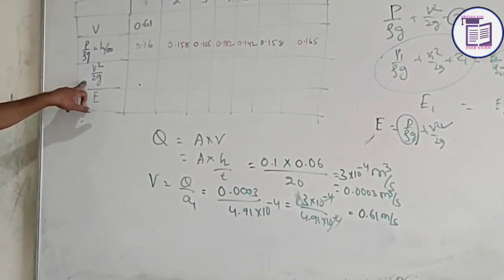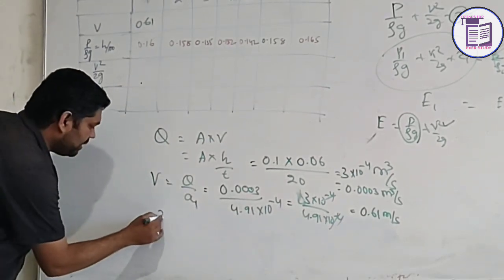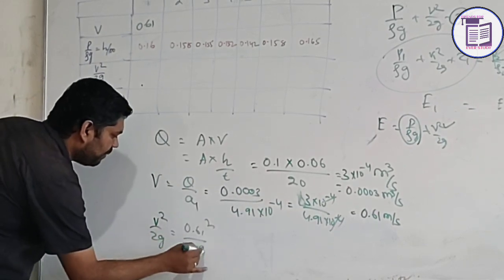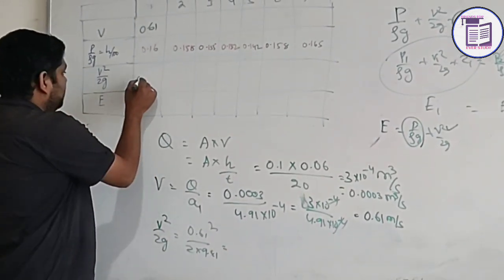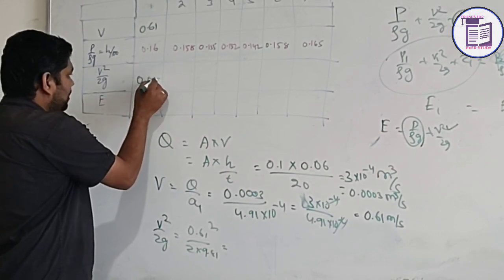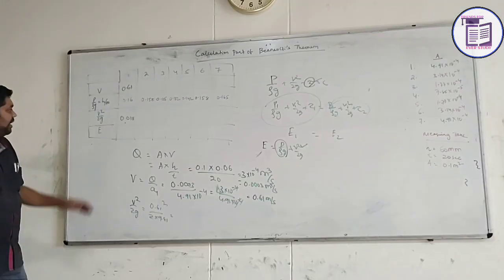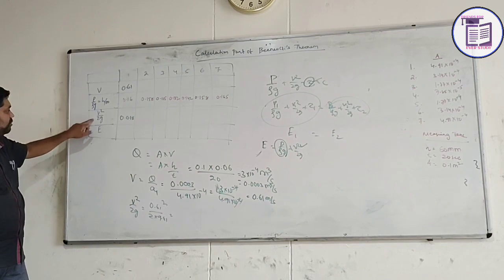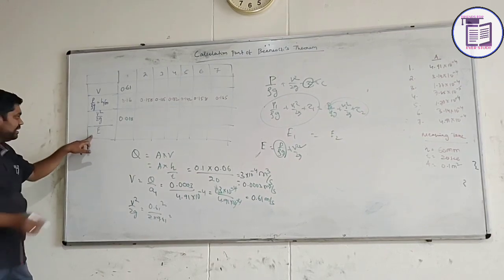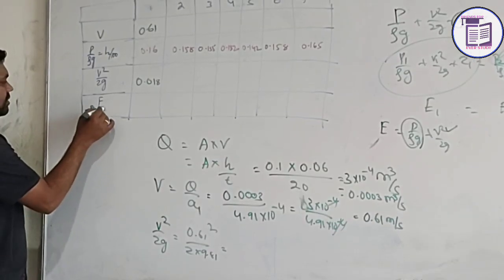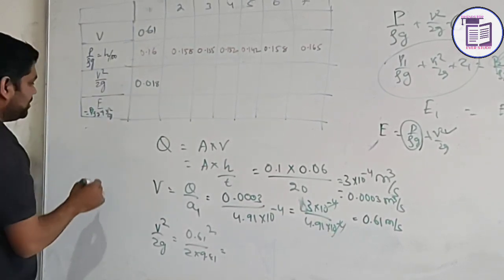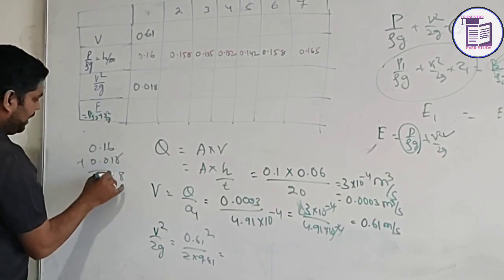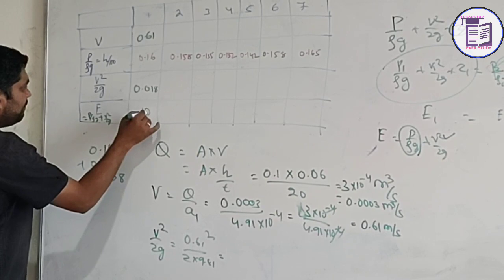And you can find V squared by 2g also. That is 0.61 squared divided by 2 into 9.81. The value is 0.018. So you have to find P by rho g plus V squared by 2g, which is your total energy E. P by rho g is 0.16, plus V squared by 2g is 0.018, giving a total of 0.178.